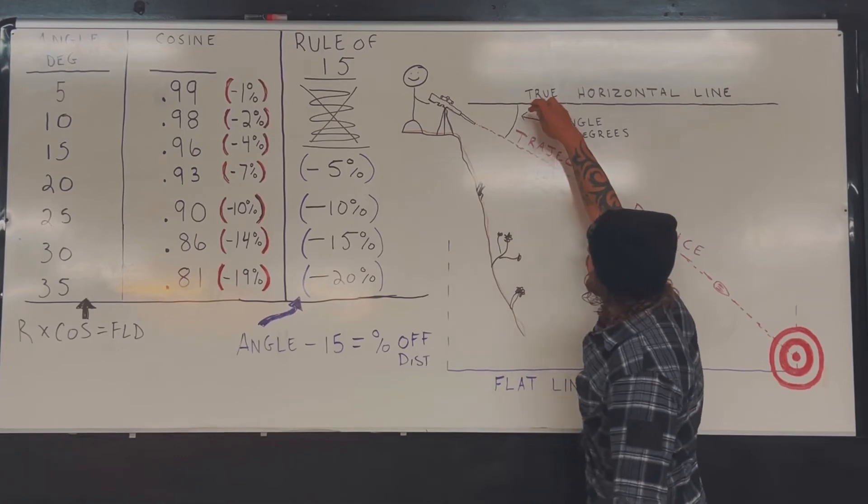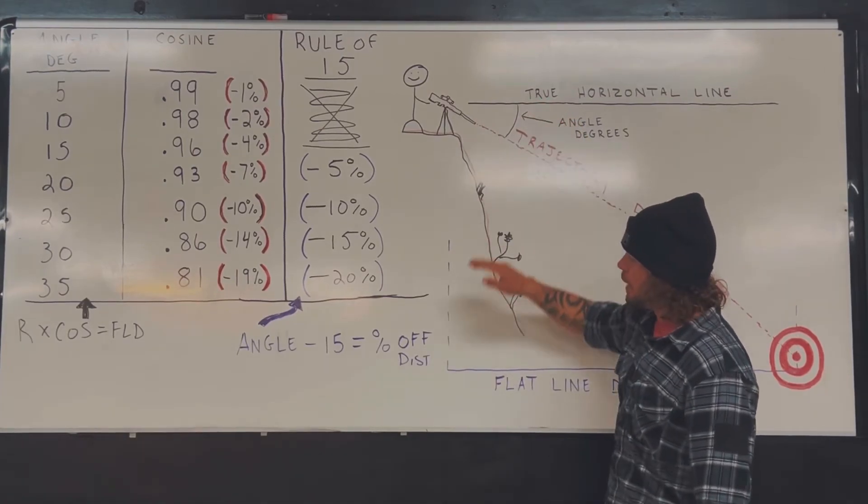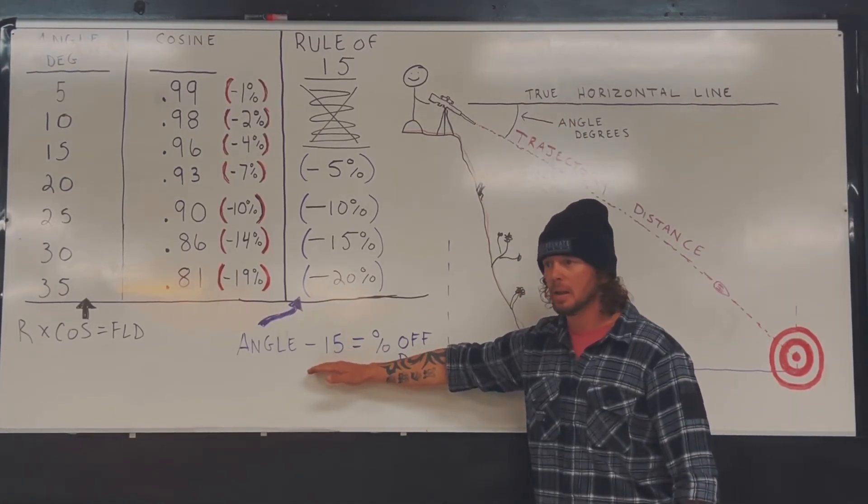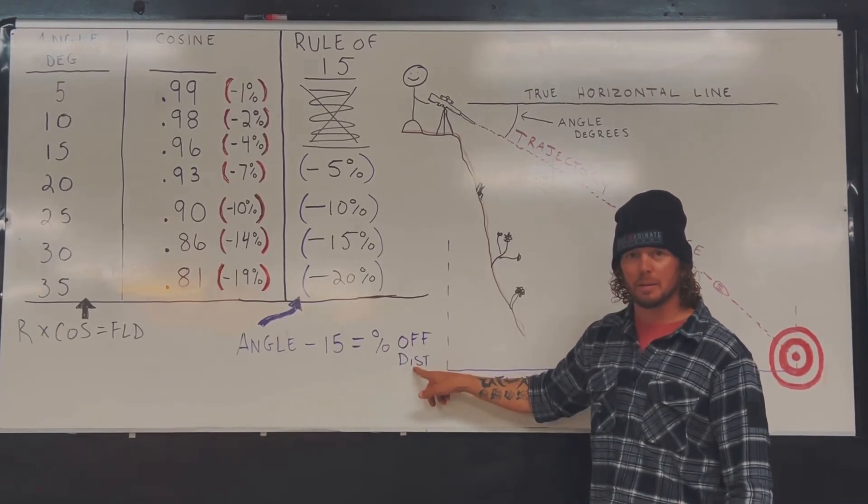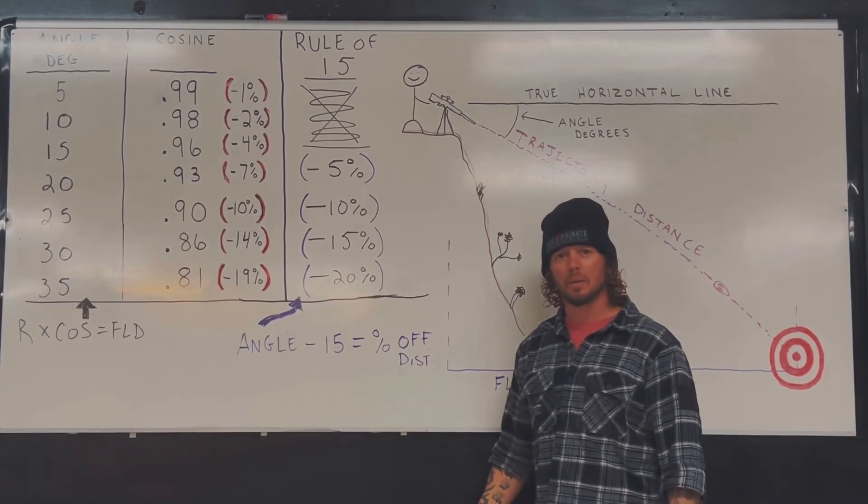So rule of 15 is very simple. Angle to the target minus 15 gives you the percentage off your distance. And that's what you will dial.